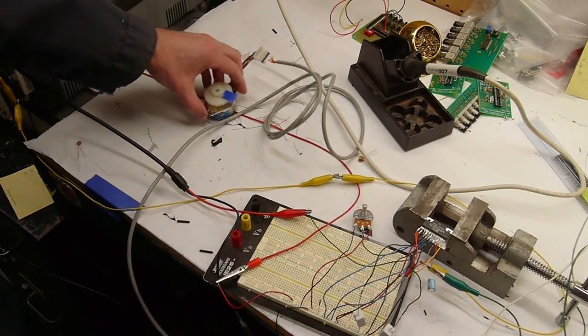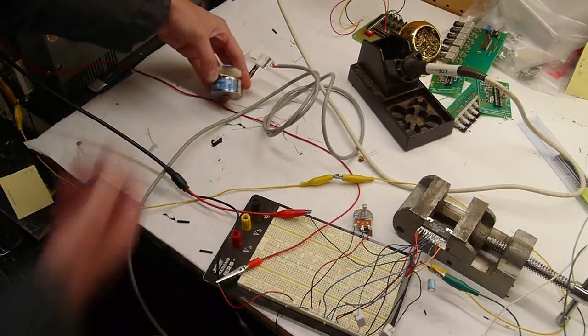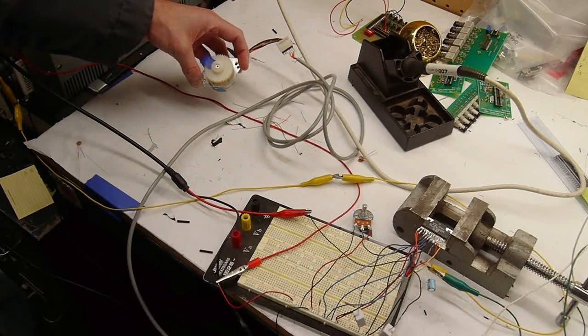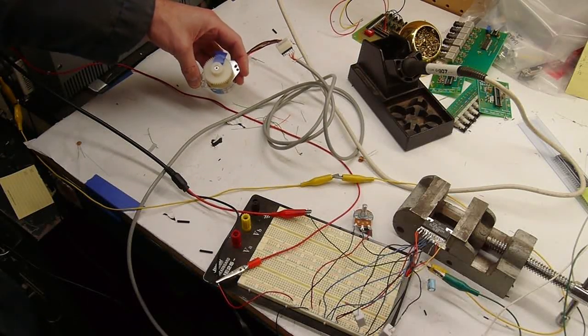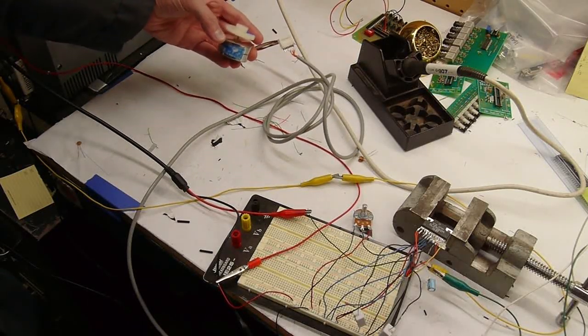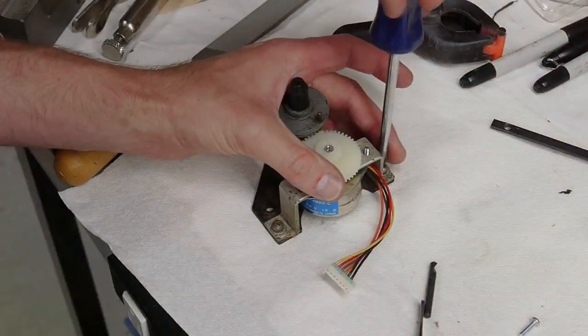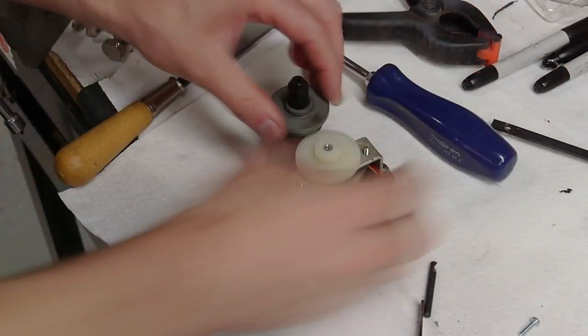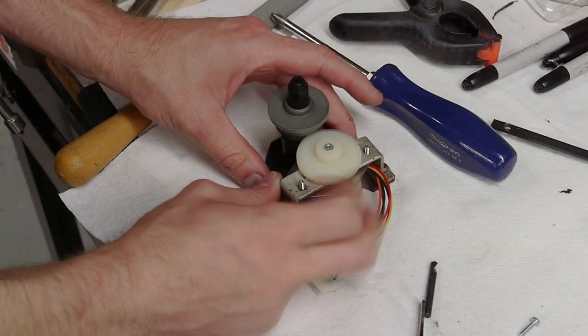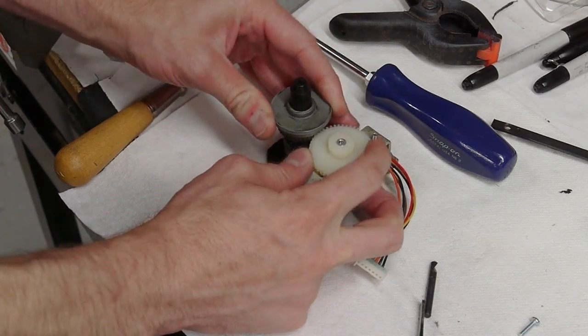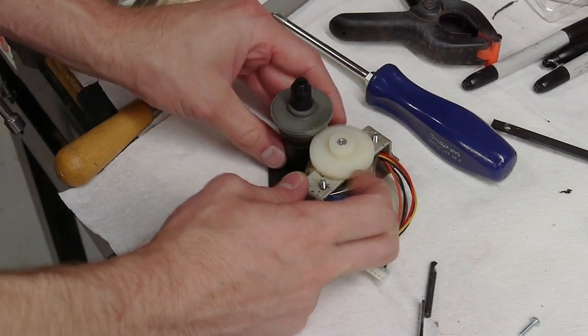One of the problems is that this stepper motor is I think seven and a half degrees per step or whatever the common stepper size is. And I chose this motor because it's going to fit into an assembly that's already in the jukebox.